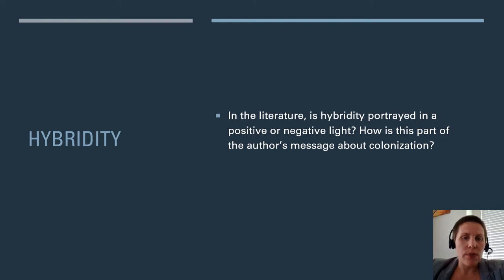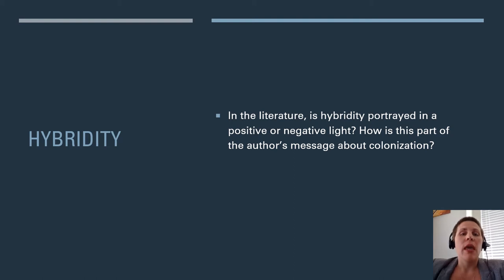It may be useful to consider the words of Lahiri, an Indian-American woman born in London who moved to America at age two. In "My Two Lives" she writes: "According to my parents, I am not American, nor would I ever be, no matter how hard I tried. I felt doomed by the pronouncement, misunderstood and gradually defiant. In spite of the first lessons of arithmetic, one plus one did not equal two, but zero — my conflicting selves always canceling each other out. As I approach middle age, one plus one equals two, both in my work and in my daily existence. The traditions on either side dwell in me like siblings, still occasionally sparring, one outshining the other depending on the day, but like siblings they are intimately familiar with one another, forgiving and intertwined." Is hybridity portrayed in a positive or negative light, and how is this part of the author's message about colonization? That quote was published March 6, 2006 in Newsweek, and there is a link in the notes section of the presentation.